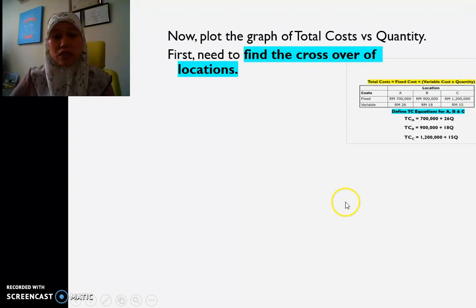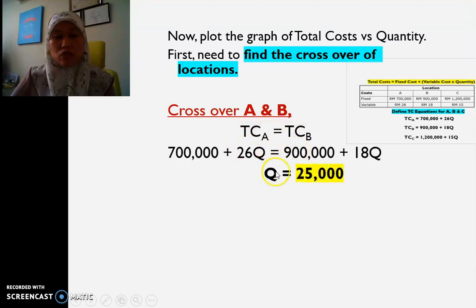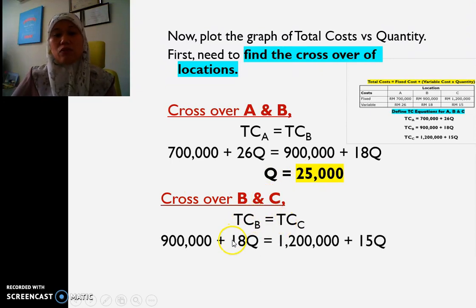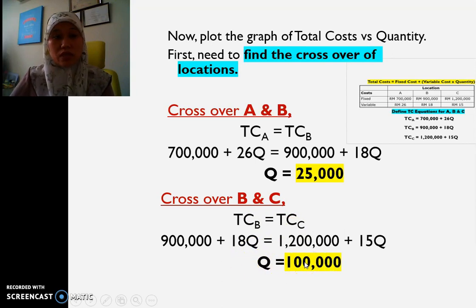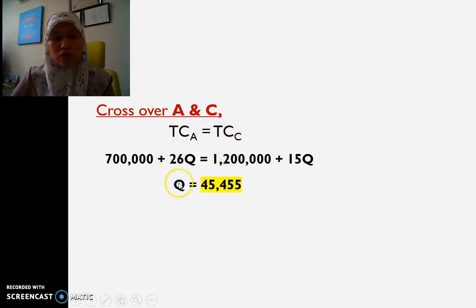Once we have all three equations, we need to find the crossover points. First, we find the crossover for A and B by setting TCA equal to TCB and solving for Q — that gives us Q = 25,000. For the crossover of B and C, we set TCB equal to TCC and solve for Q, giving us Q = 100,000. And for the crossover of A and C, setting TCA equal to TCC gives Q = 45,455.